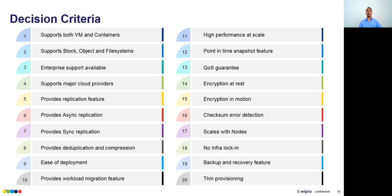Eleventh: does it support high performance? This may not be a key criterion for everyone, but for telco-grade workloads like VNF hosting, storage performance and network throughput matter critically. Twelfth: point-in-time snapshot feature for application backups. Thirteenth: QoS guarantee — guaranteed IOPS per second. Fourteenth: encryption at rest, encryption in motion, and checksum-based error detection.